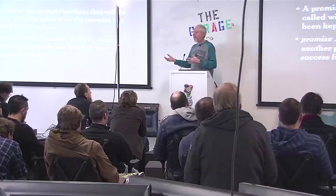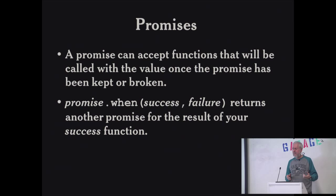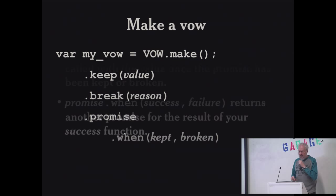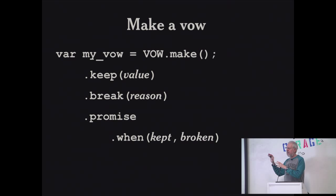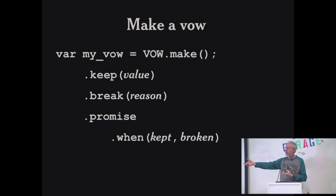Here's a function for making a promise — calling it vow. A vow will produce an object with three things: keep, break, and promise. Promise is an object representing the promise itself. I can take the promise and hand it to you, and in the future when I know the result, I can call either keep or break, and then your promise will change its state and good things happen.